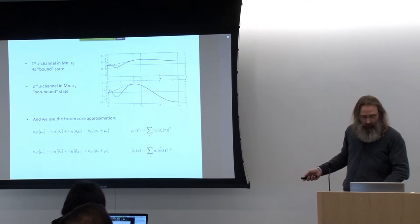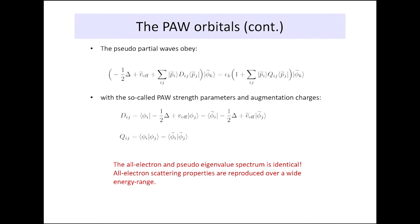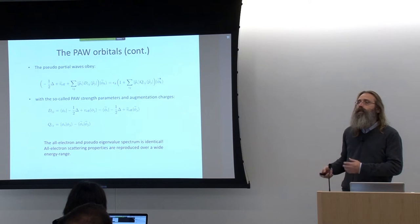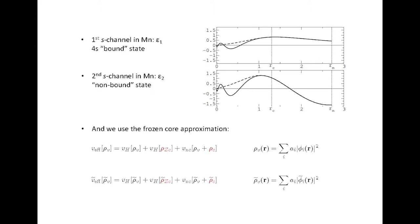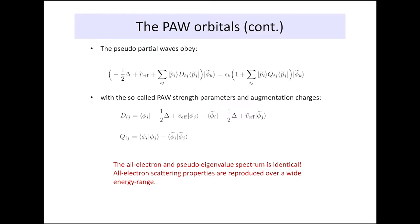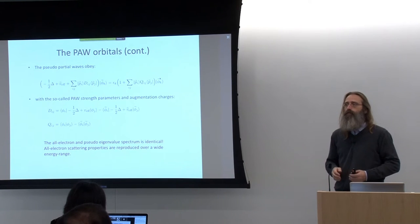That is where the PAW method differs from ultrasoft pseudopotentials. In computing the strength parameters, ultrasoft pseudopotentials would use the atomic density for these two terms. In the PAW method, you use the actual density decomposed in these partial waves inside the strength parameters. From a computational point of view, it's not a huge effort, but it's an additional effort to update these potentials and strength parameters in every step where the density changes — something you would not do in an ultrasoft pseudopotential.